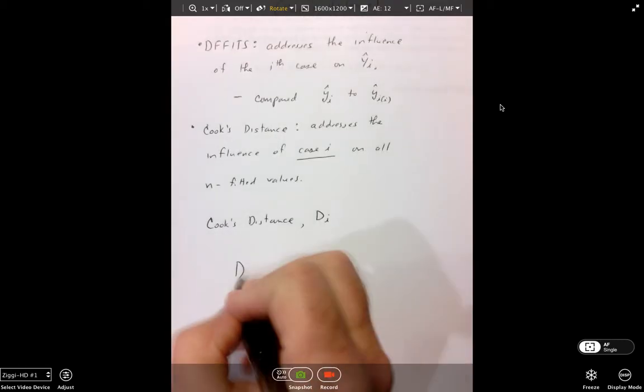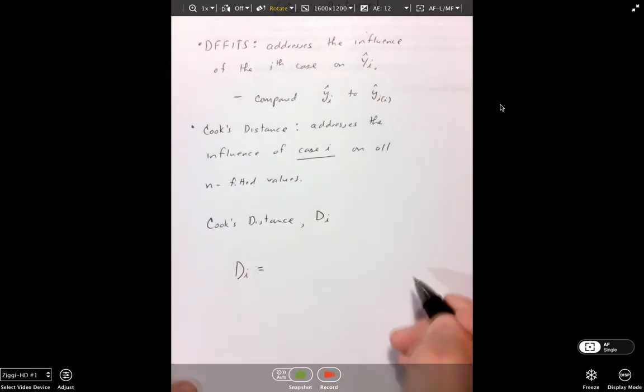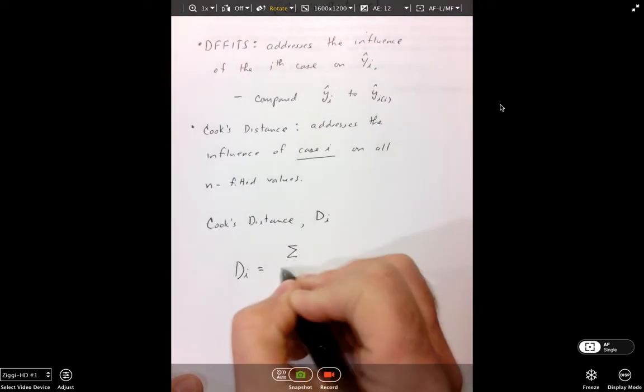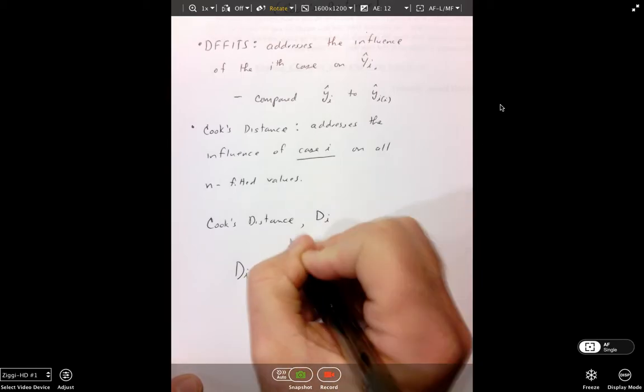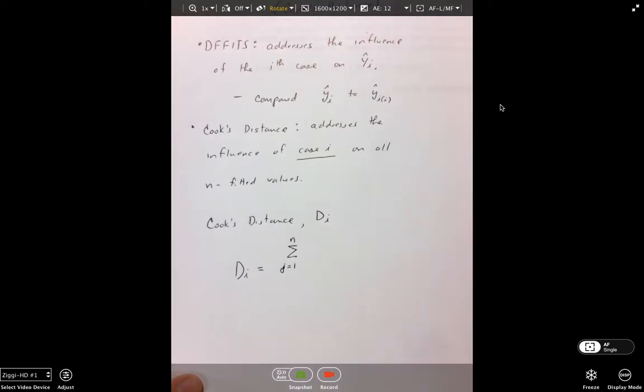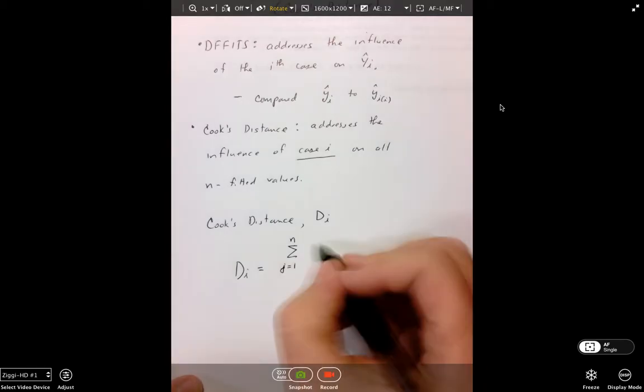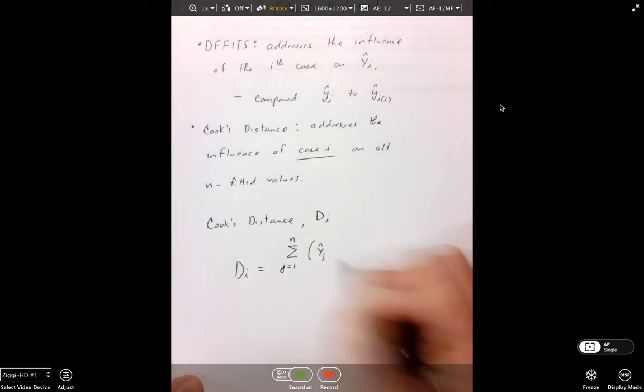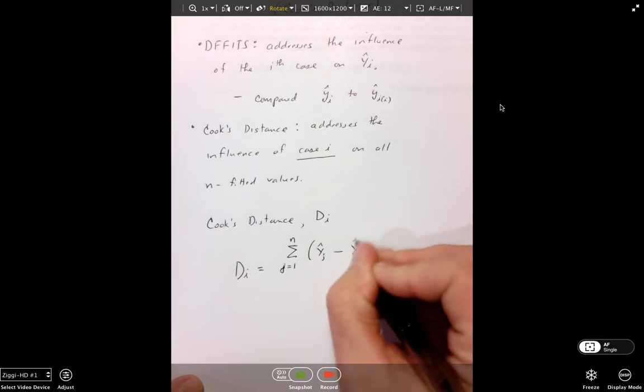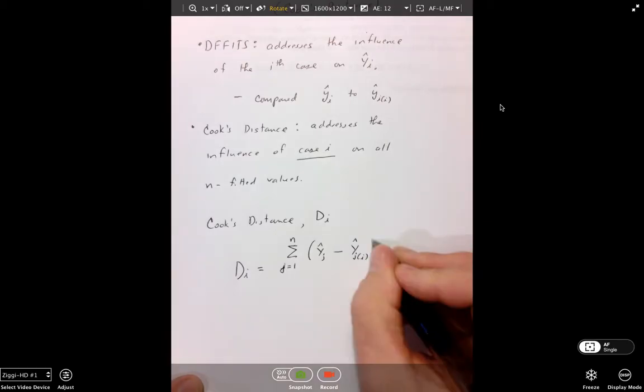So what this does is it addresses the influence of case i on all fitted values. And it looks to see how the fitted values change for all of the cases compared to i being in the model and i being out of the model. So the model created when i is included and when the model that is calculated with i is out of the model.